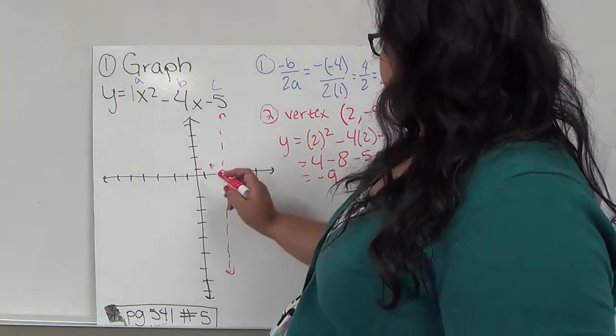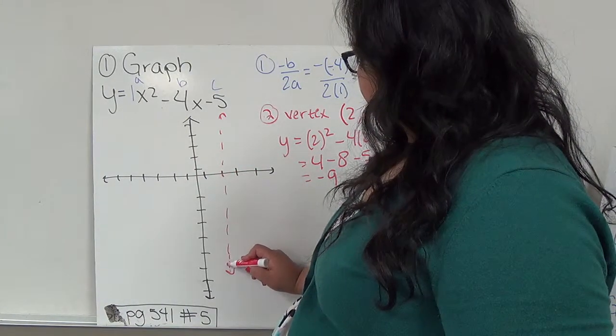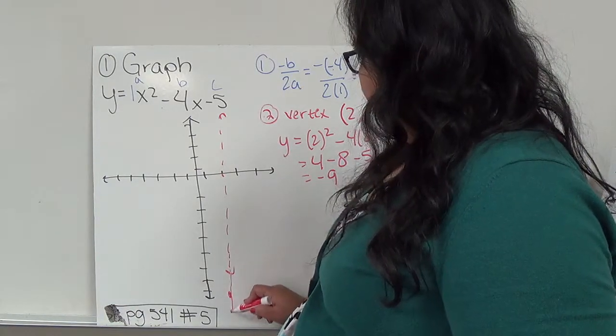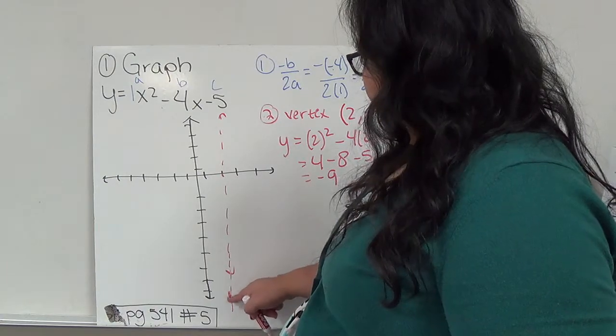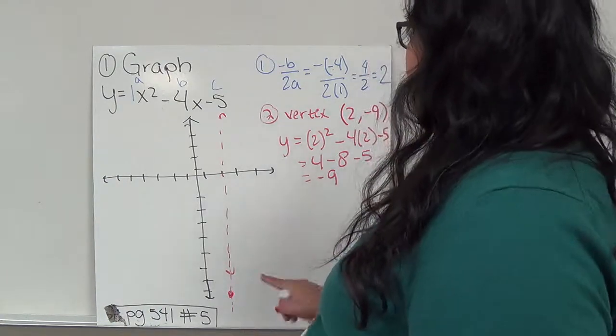So I'm going to do 2, 1, 2, 3, 4, 5, 6, 7, 8, 9. So my vertex is here. My vertex is right here.